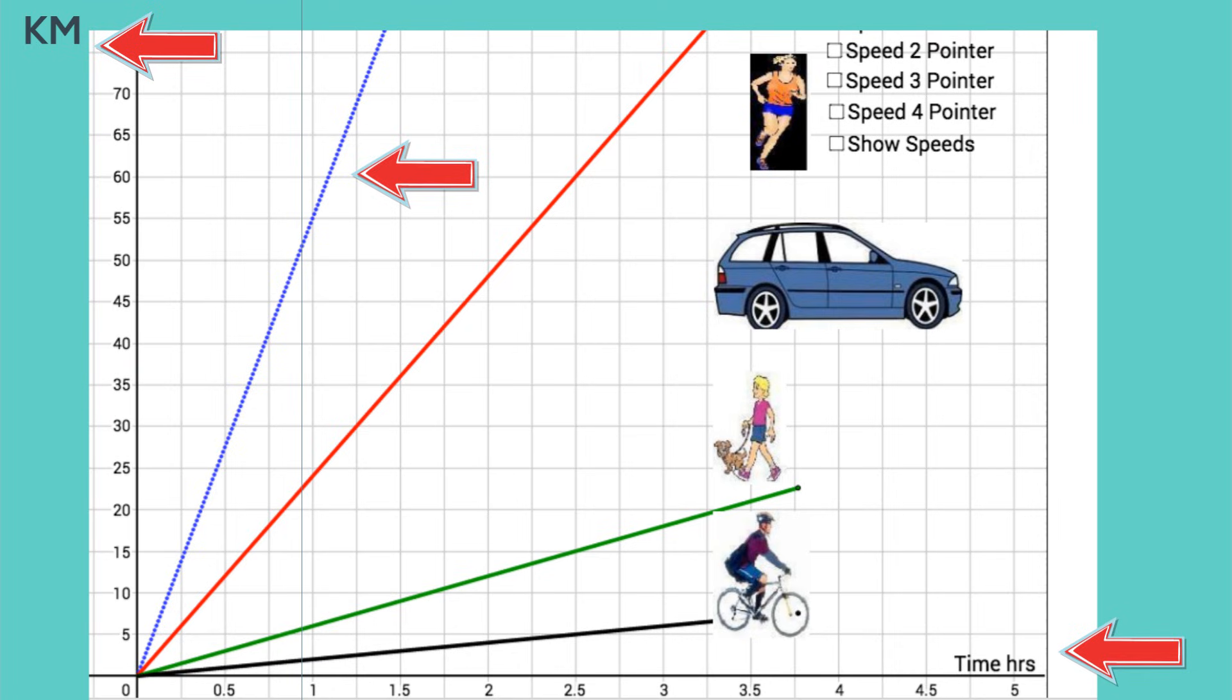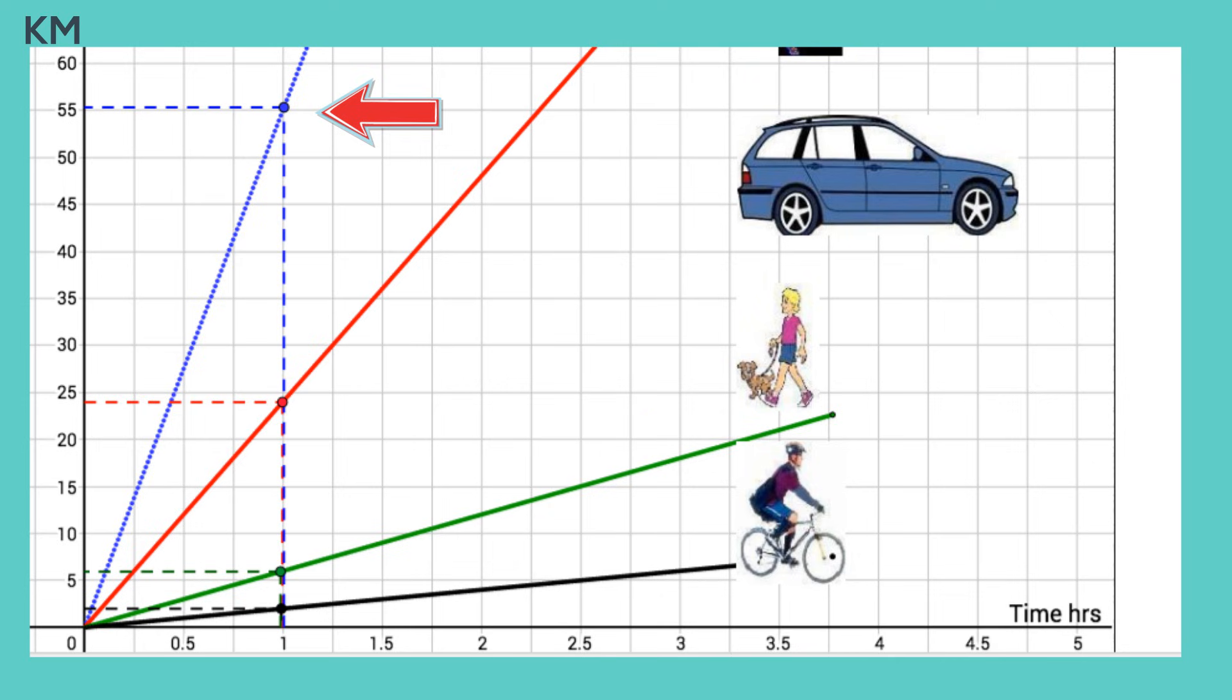Let's look at this mathematically. If you look at the blue line, let's look at the first hour. So we'll use our speed formula. The final distance is 55 kilometers and the initial distance is zero. The final time is one hour and the initial time is zero.